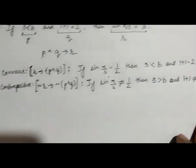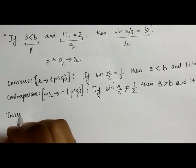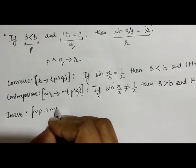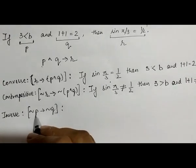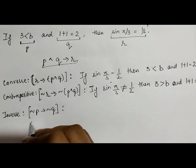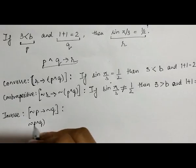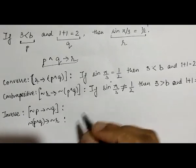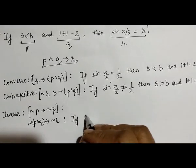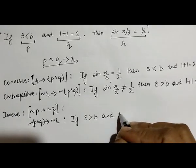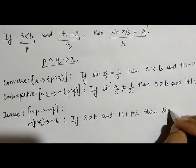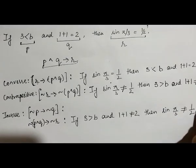The inverse is 'if not p then not q', which here becomes 'if not (p ∧ q) then not r'. The statement is: 'if 3 is greater than b and 1+1 is not equal to 2 then sin(π/3) is not equal to 1/2'. This is how we express any conditional statement into its converse, inverse, and contrapositive.